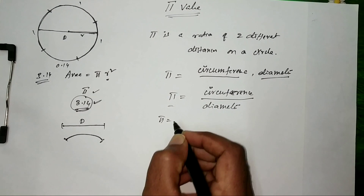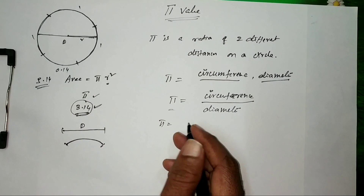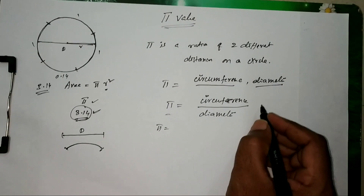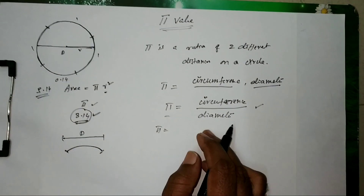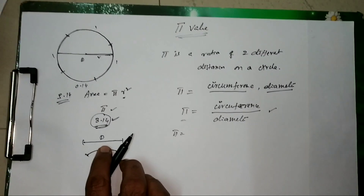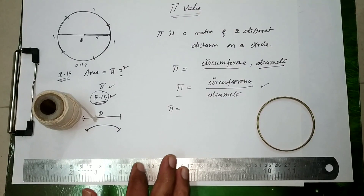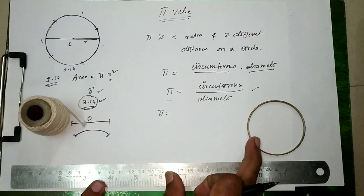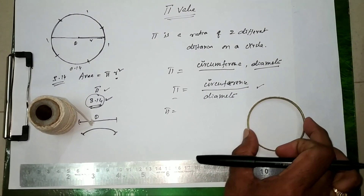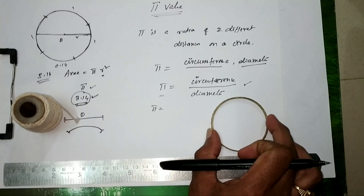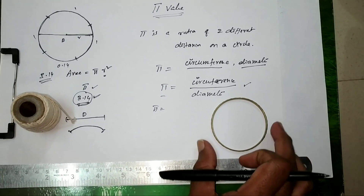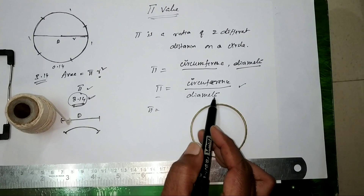This pi value is the same for any size of circle — irrespective of the size, circumference divided by diameter always gives 3.14. Now let's verify this practically. For this experiment we need three objects: a bangle (treated as a circle), a thread, and a scale.